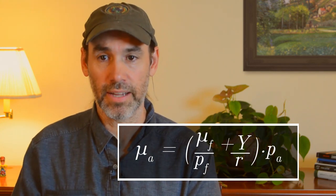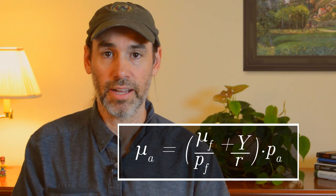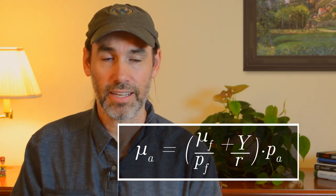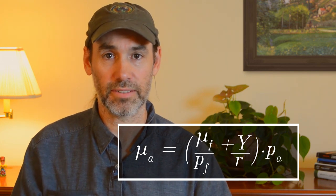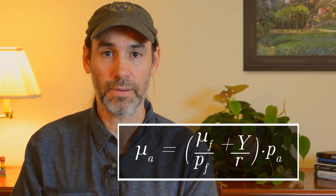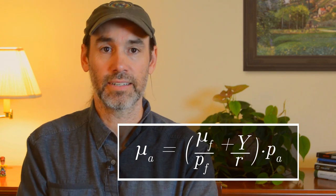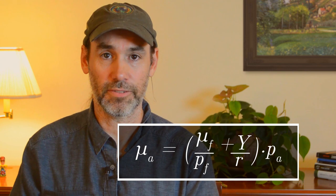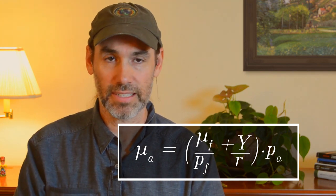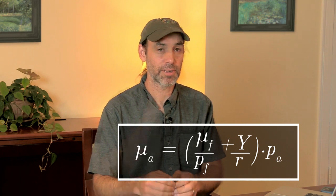The mean of the analysis step is just a weighted average between the mean of the forecast and the mean of the data, each weighted by their precisions. So I have the precision of the data divided by the total precision — the data precision plus the forecast precision — giving a weight to the data, and likewise a weight from the prior forecast that comes from the forecast precision divided by the total precision.